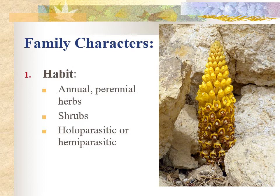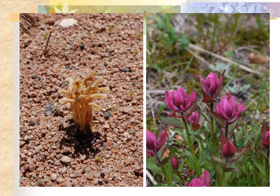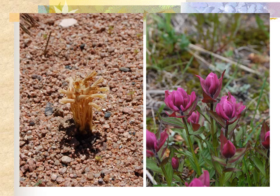Generally, the Orobankaceae are annual and perennial herbs, though we do sometimes see shrubs. The key characteristic is that they are either holoparasites or hemiparasites. Holoparasitic members lack chlorophyll entirely, because they get 100% of their nutrients from their host plant. In contrast, hemiparasitic members retain some chlorophyll because they still perform photosynthesis, being only partially parasitic.